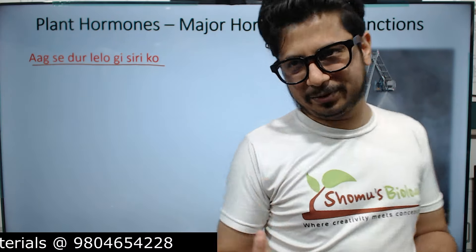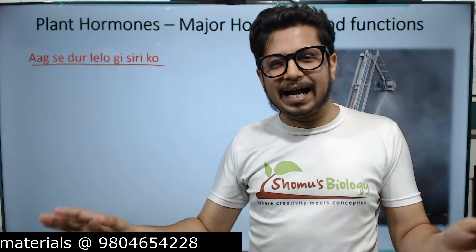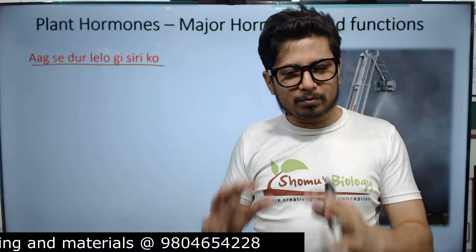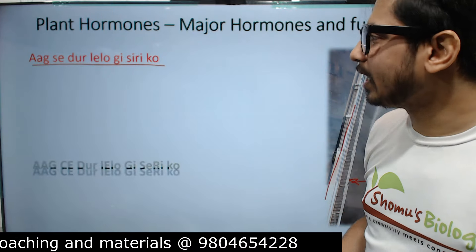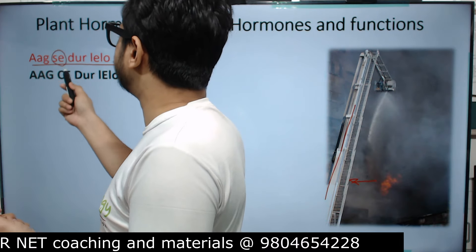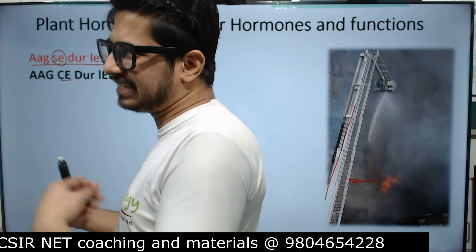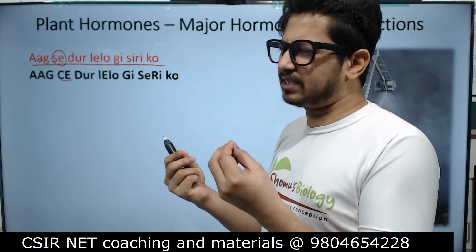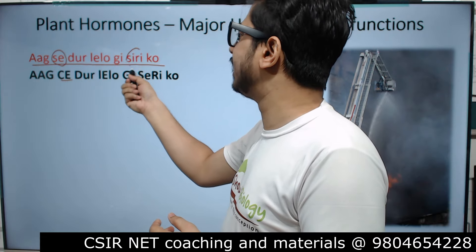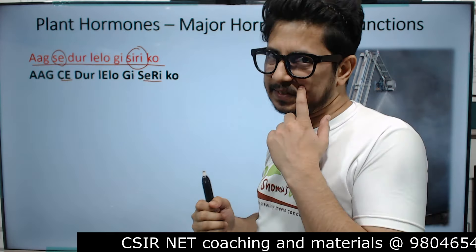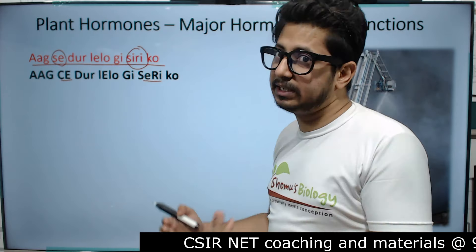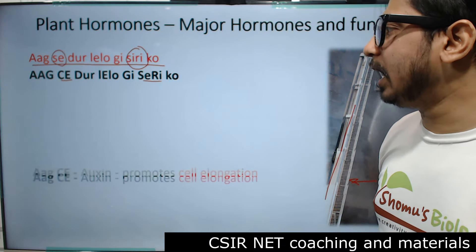Once you know that, you will understand and can write down the names of the major hormones in plants and their functions. We'll modify the sentence a little bit — instead of 'say' we use 'see'. The mnemonic becomes: 'Aag Se Door Le Lo, Ji CD Ko' — this encodes all the key plant hormones.